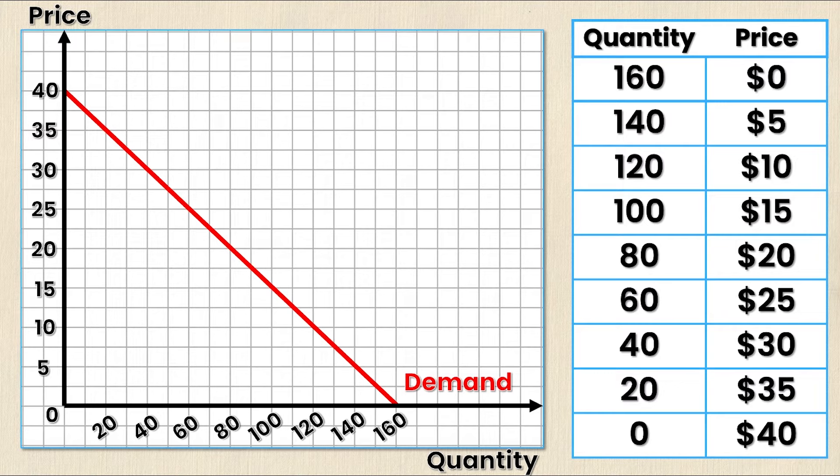All of the points from my demand schedule are on that demand curve, and since it's continuous there are other points that are not on my demand schedule that are on the graph. In another video we go over graphing the demand curve using only the demand equation instead of the demand schedule. Arguably the demand schedule is a little bit easier because it's simply a series of ordered pairs — you plot those points and then connect them with a line.